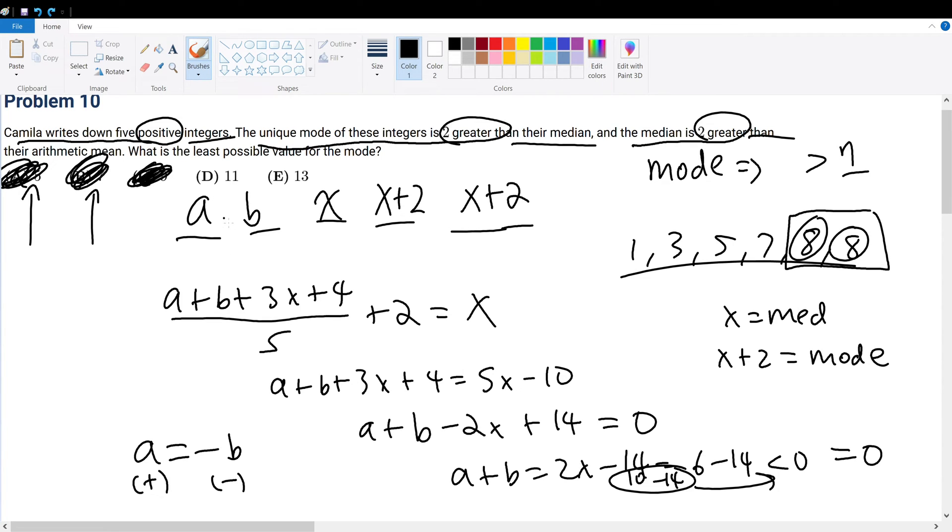What about choice d? Choice d is where the mode is 11, so x is equal to 11 minus 2, which gives 9. Which means that 9 times 2 minus 14 would finally give a number that's greater than 0, such as 4. But wait a minute, this is a constraint on a and b. a and b must be less than the median. In this case, the median is equal to 11 minus 2, which is 9.